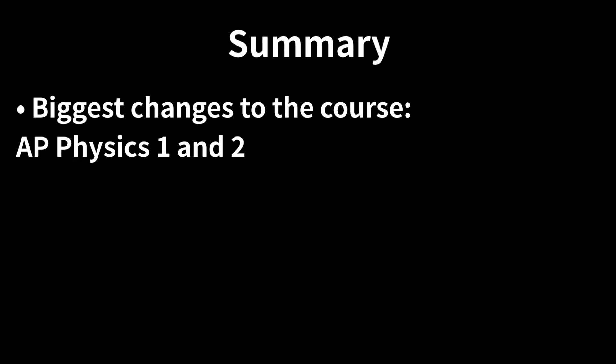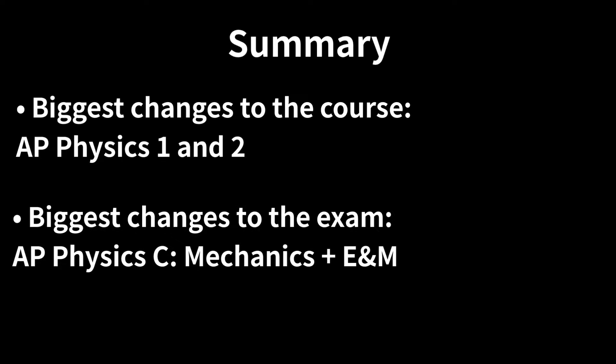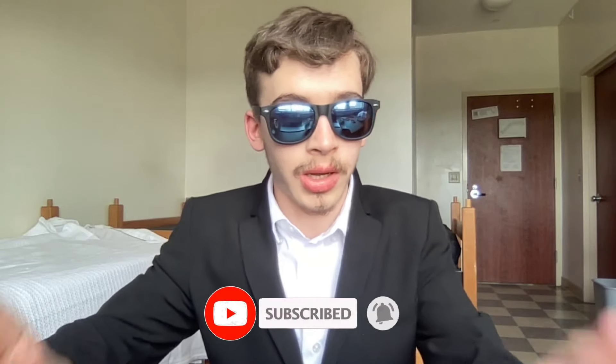In summary in terms of course changes the most impacted courses include AP physics one and two with an additional unit and the unit breakup respectively. With regards to exam the AP physics c exams will be much longer and less time restrictive allowing for in-depth analysis of each individual question and a higher probability of getting a five on the exam. Really looking forward to the score distributions for these courses in june 2025 but until then that is all for AP physics changes for the 2024-25 school year. Do let us know what your thoughts and what factors you believe were necessary which not so much and overall the best and worst changes within this context. Thank you for watching make sure to like and subscribe and we will see you in the next video.